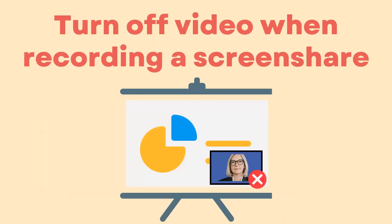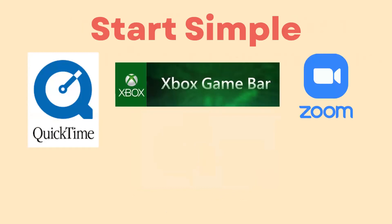Tip number two: turn off your video when recording a screen share. It is very easy to forget, but when you are recording, if you keep your video on while recording your screen, many recording softwares will include a thumbnail video of your face overlaid on the screen, and this might cover up some critical information that you want your students to see. Tip number three: start with simple tools. For most videos, you can use a combination of Zoom screen recording and whatever video editing software comes with your computer. Most Apple computers come with QuickTime screen recording and editing software, and newer PCs will come with Xbox Game Bar, which you can use for screen recording and editing.